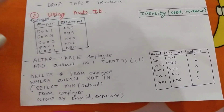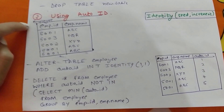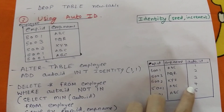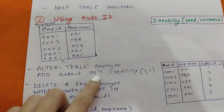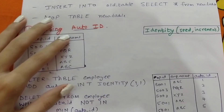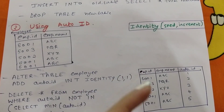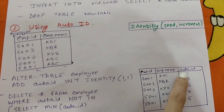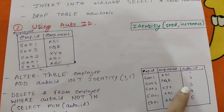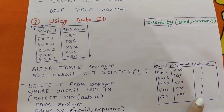To add the auto ID, we use: ALTER TABLE employee ADD auto_id INT IDENTITY(1,1). auto_id is just a name given to this field. IDENTITY(1,1) has two parameters: seed and increment. Seed is the starting value — I'm starting from 1 — and increment of 1 means it will increment by 1 every single time, so 1, 2, 3, 4, 5. This is how we add an auto ID to the table.